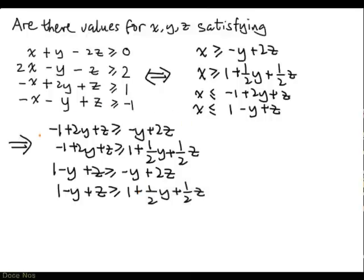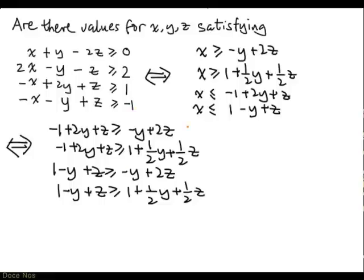So now I have a system of inequalities involving only y and z. If y and z come from a solution to the original system, then they must satisfy this reduced system. But we also know that if we can find y and z satisfying this system, we'll be able to extend it to a solution to the original system by choosing an appropriate value for x — because these constraints enforce that all upper bounds for x are at least the lower bounds. So these two systems are equivalent: solving one lets us solve the other.